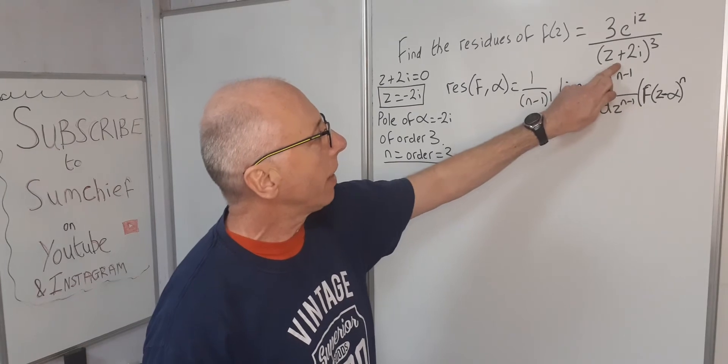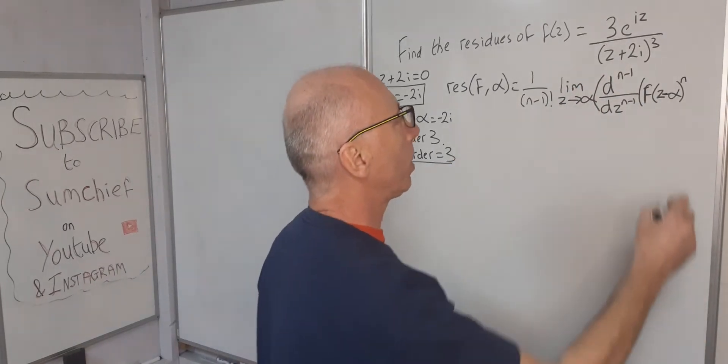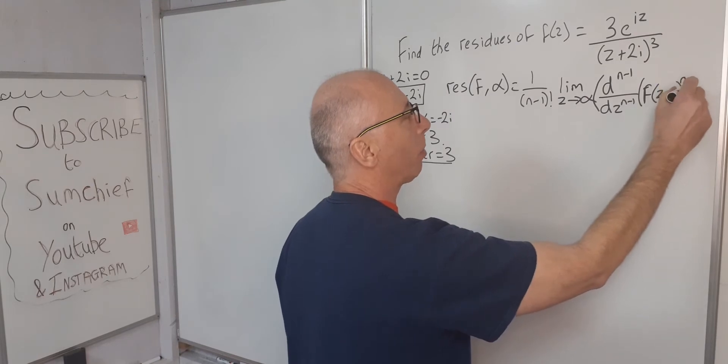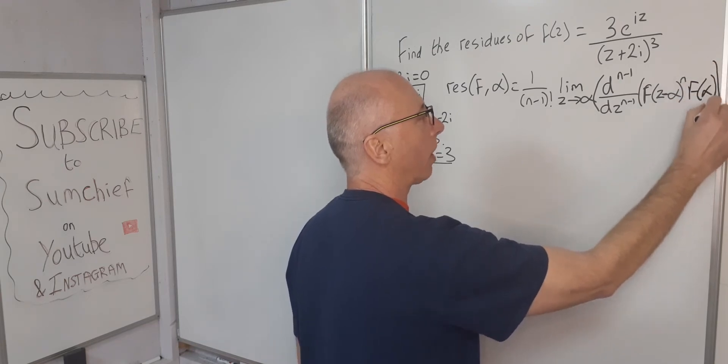Now (z - alpha) is very important here because that's where our pole is and that's to the power of n. So (z - alpha)^n, that's going to be this one here. And then what we do is we multiply this by the rest of the function, which we call f at alpha, which is what's left behind.